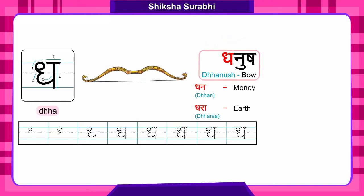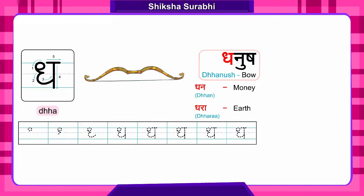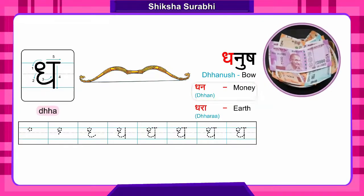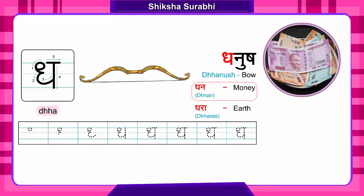In previous pages we saw arrow — bow and arrow. We have seen it in the Ramayana and Mahabharata. That is called bow. Dha say Dhanush. Dhanush means money, wealth. It is called Dhanush. Dha say Dhanush.